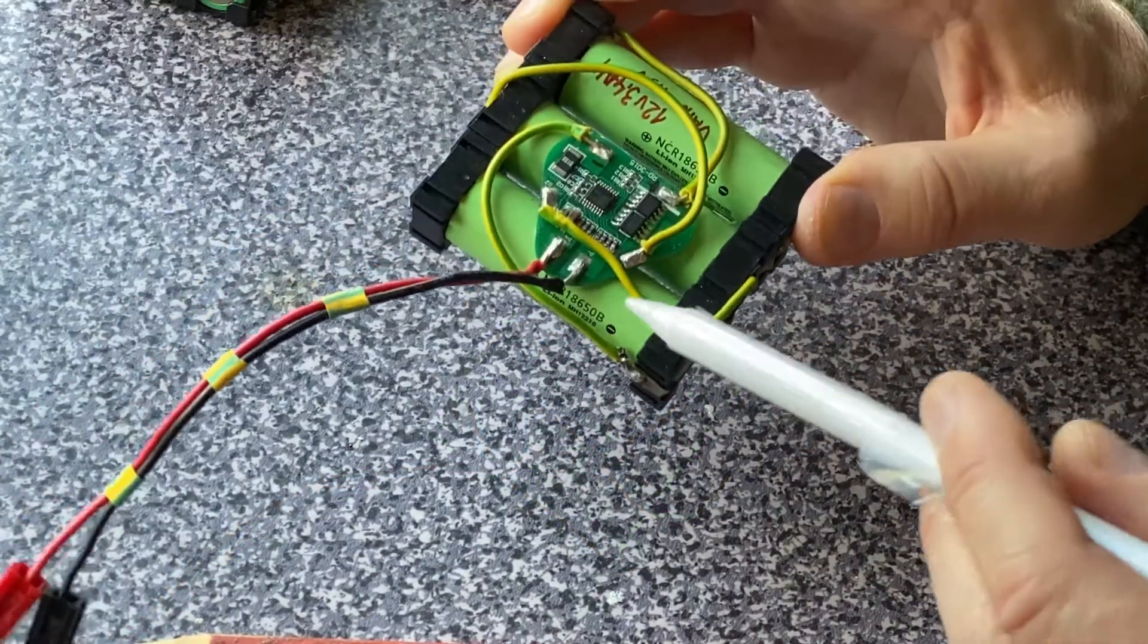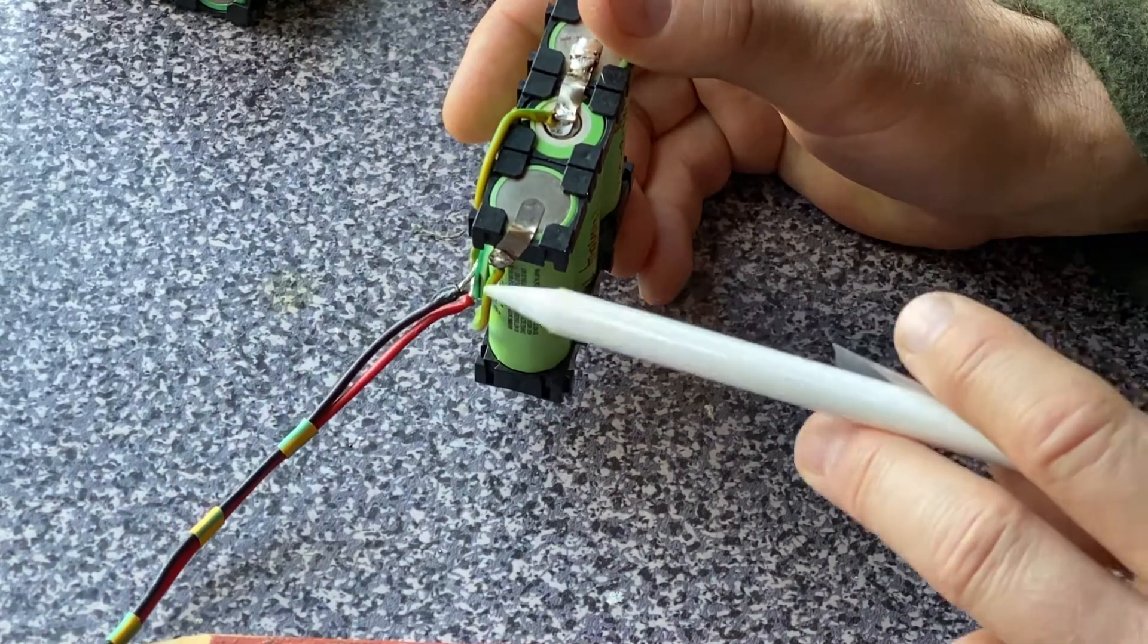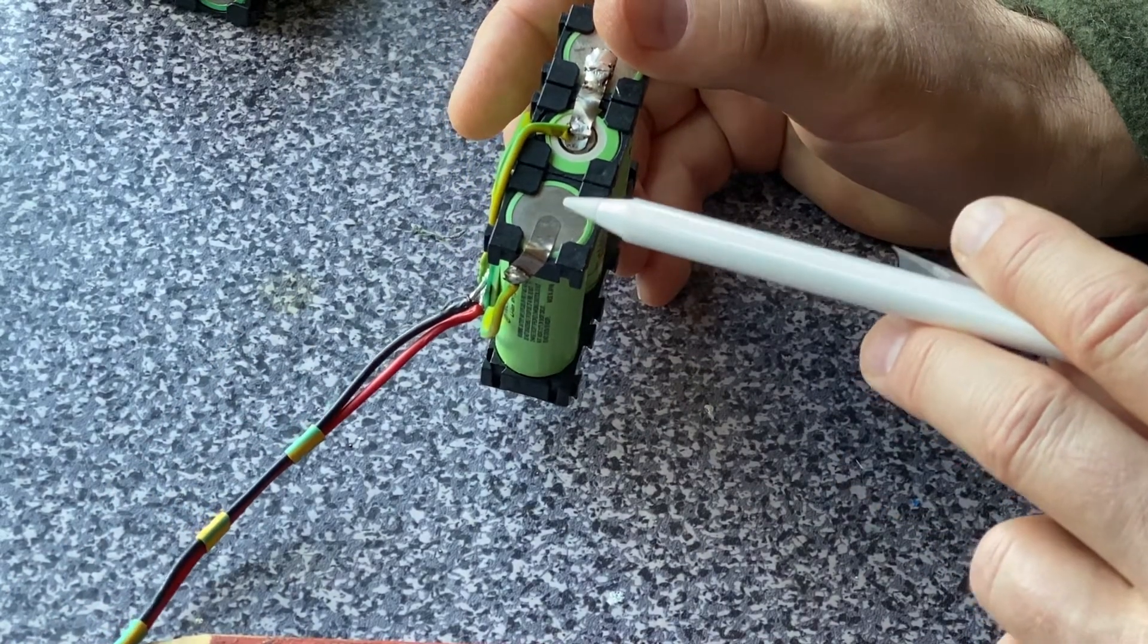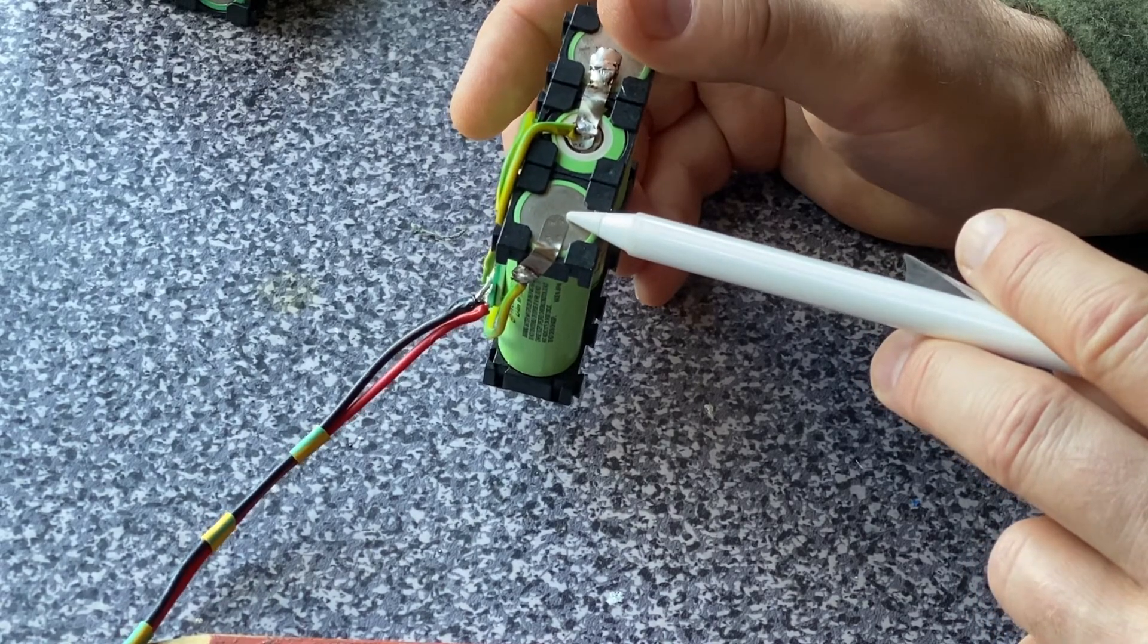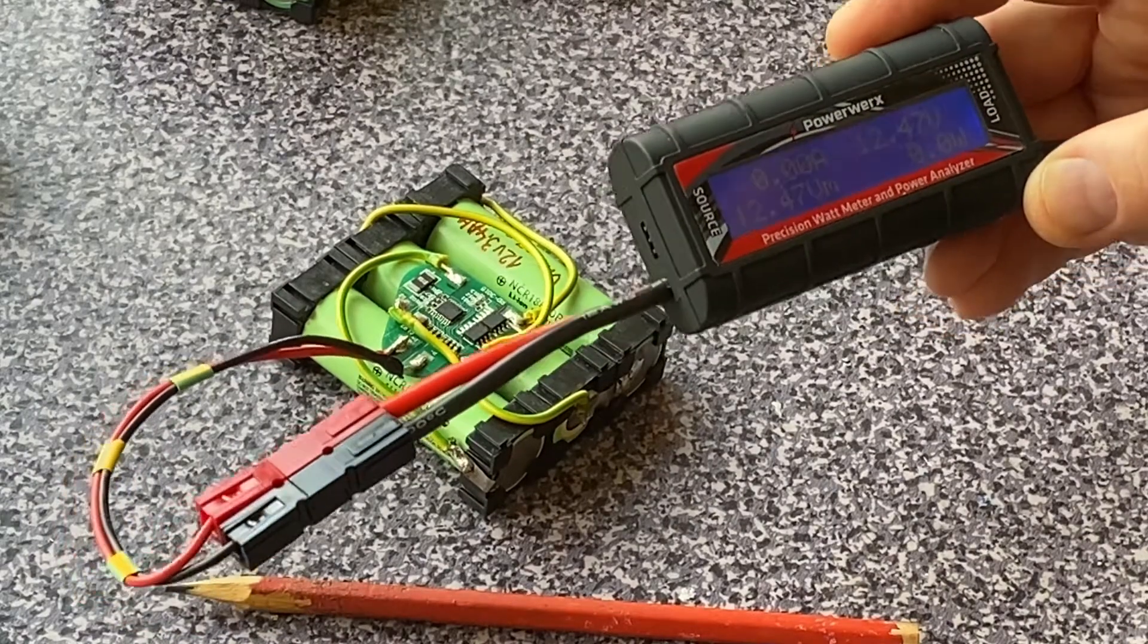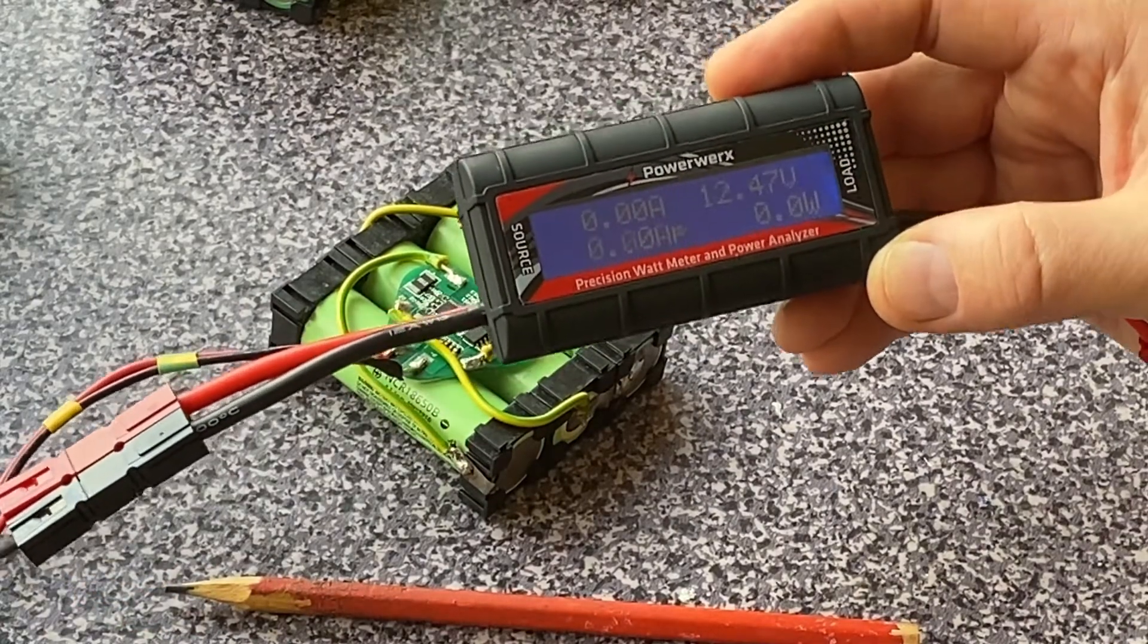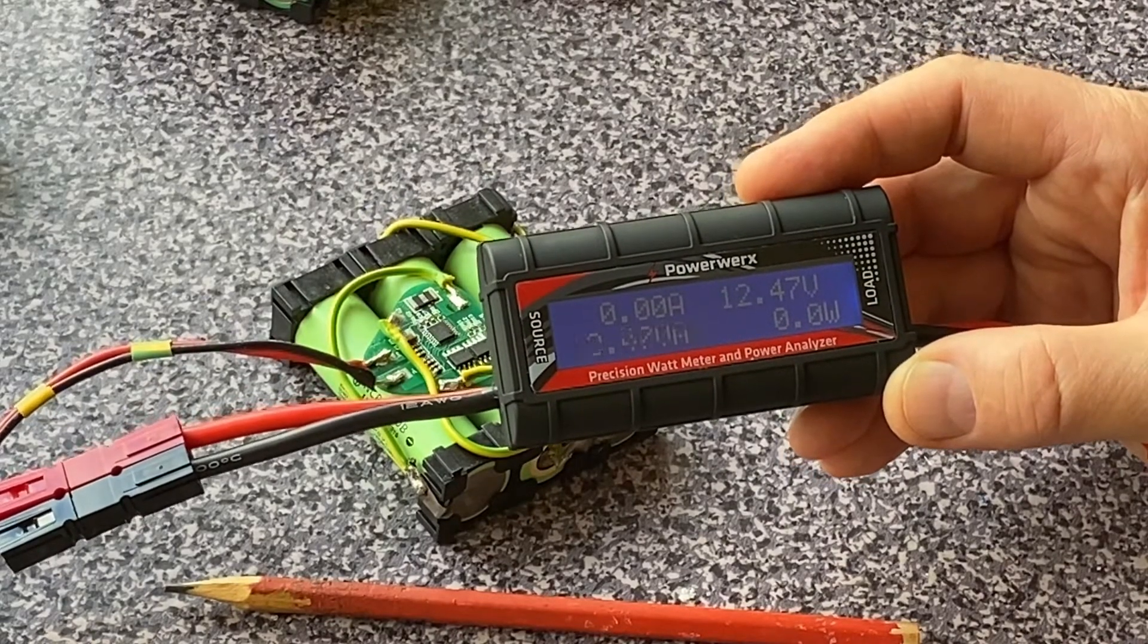Now what is good with these Panasonic cells that they come with the contacts spot welded to the minus side of the battery cell. In the end as usual we test the battery pack how it works and it works. 12.47 volts for the charged battery pack.